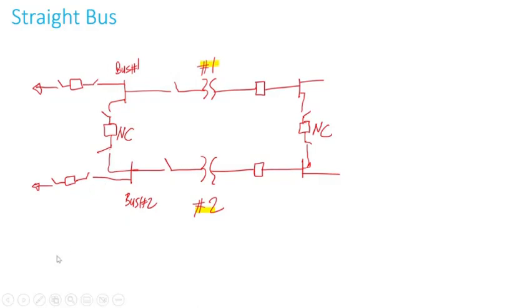If I call this the high side of the transformers, this is the low side. The high side can be 230 kV, 345 kV, 138 kV, 161 kV, 69 kV, 34 kV and so forth. The low side can be 138 kV, 161 kV, 34 kV, 69 kV, 12 kV, or 4 kV. For now, we'll just call it high side and low side, or primary and secondary.